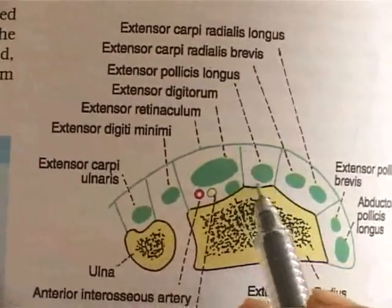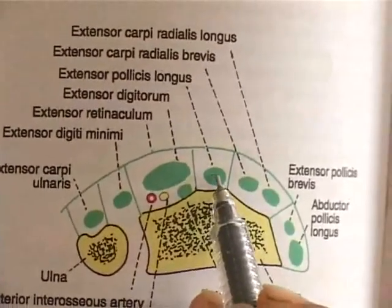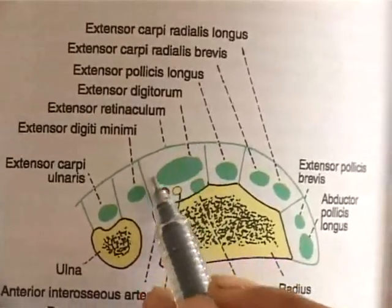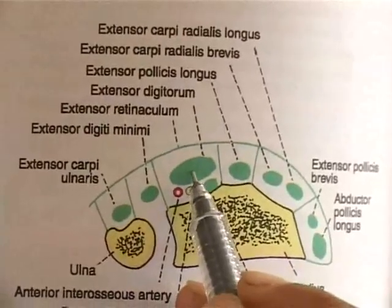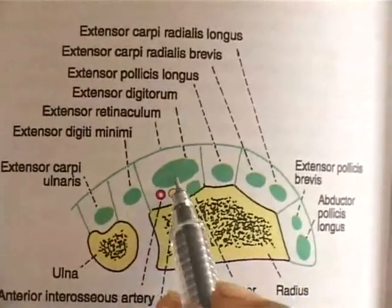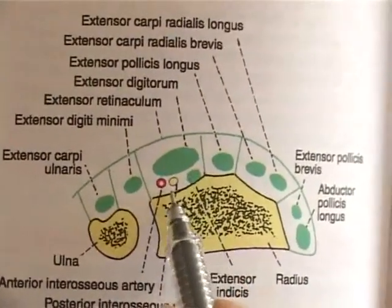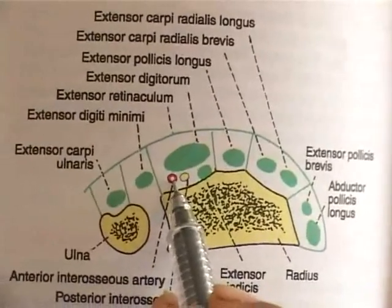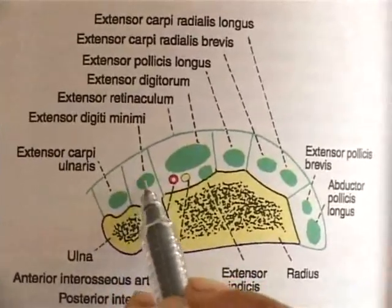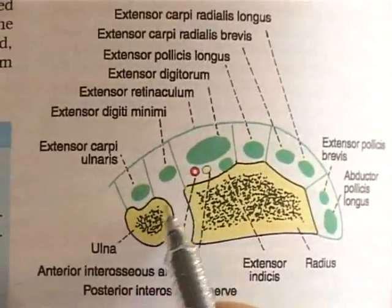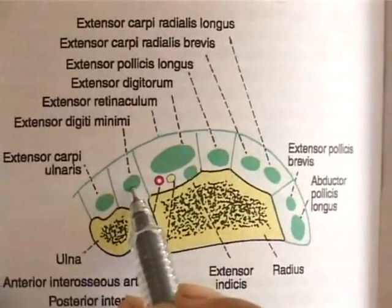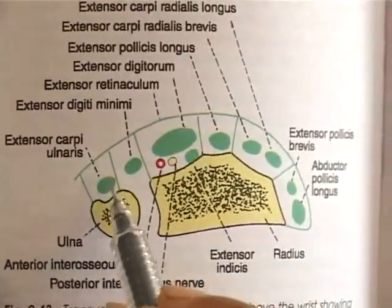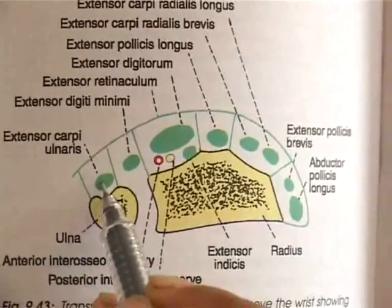The third compartment contains only one tendon: the extensor pollicis longus. The fourth compartment has four structures: extensor digitorum, extensor indicis tendon, the posterior interosseous nerve, and the anterior interosseous artery. The fifth compartment lies between the radius and ulna and contains the tendon of extensor digiti minimi. The last compartment on the ulna contains the tendon of extensor carpi ulnaris.